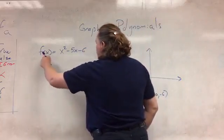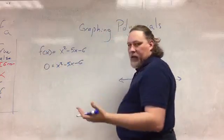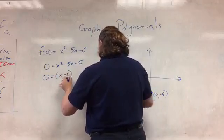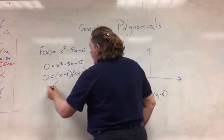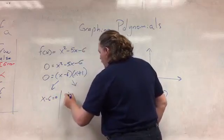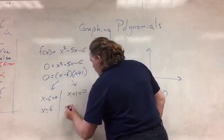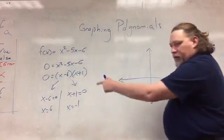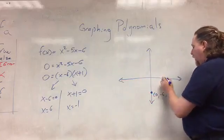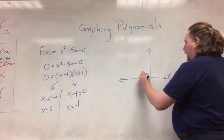What about the x-intercepts? To get the x-intercepts, I have to set this equation equal to 0. So 0 equals x squared minus 5x minus 6 and solve. Factoring gives me 0 equals (x minus 6)(x plus 1). Set each equal to 0: x minus 6 equals 0, or x plus 1 equals 0. That gives me x equals 6 or x equals negative 1. Those are the x-intercepts — the graph crosses the x-axis at positive 6 and at negative 1.